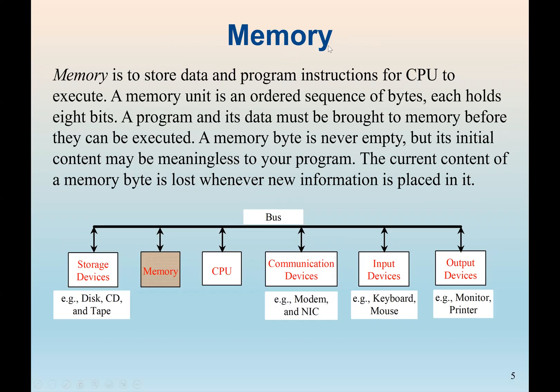Next is the memory. So the memory stores data. The memory normally stores data and program instructions for the CPU. As we said earlier, the CPU can only access data and programs from the memory, not from the hard drive. And also a memory unit is an ordered sequence of bytes. And normally each byte holds eight bits. And normally memory has something we call cells. Each cell has its own unique address.